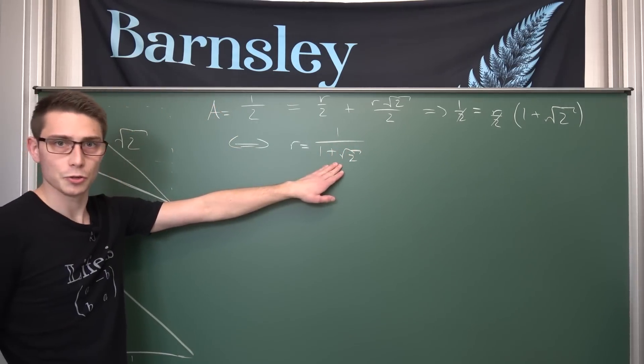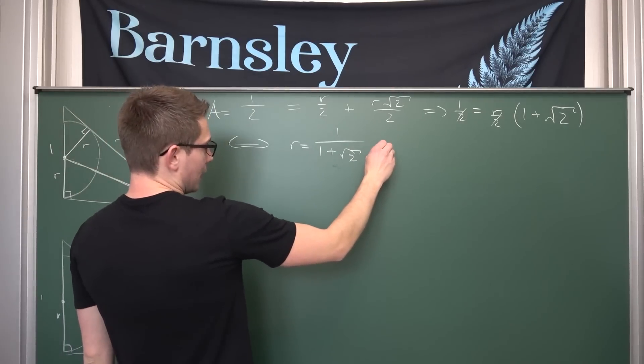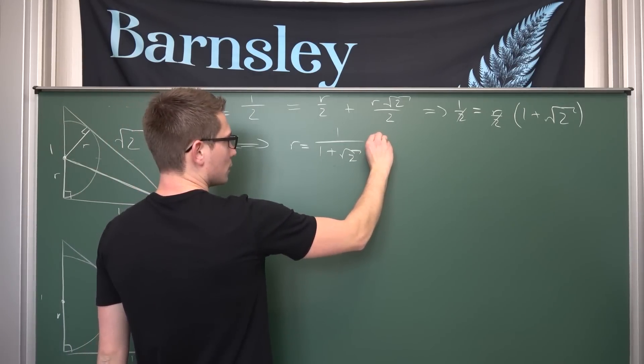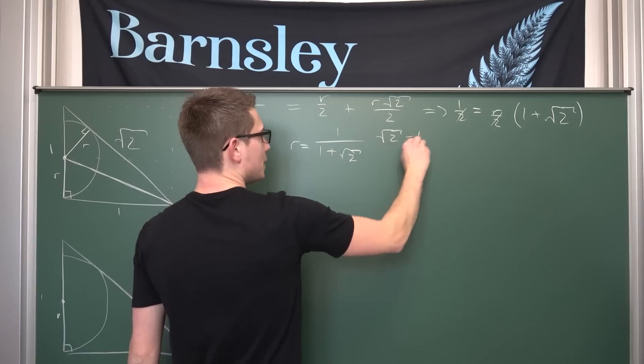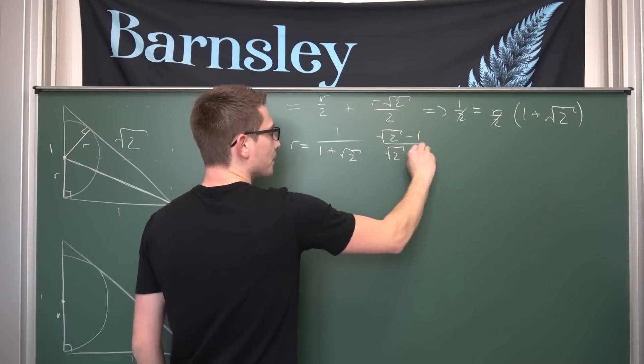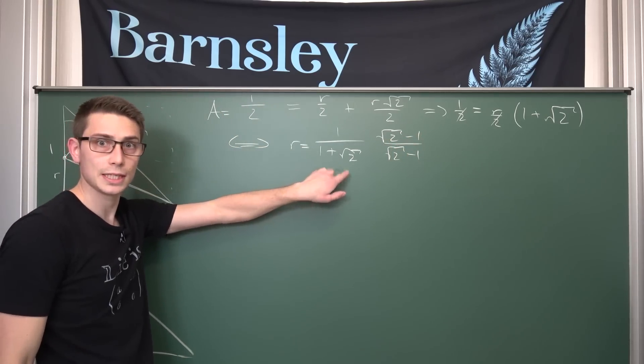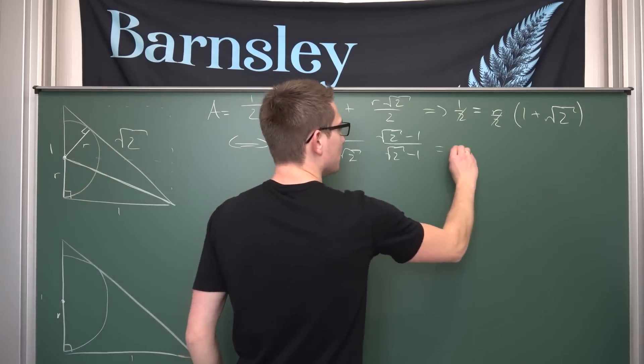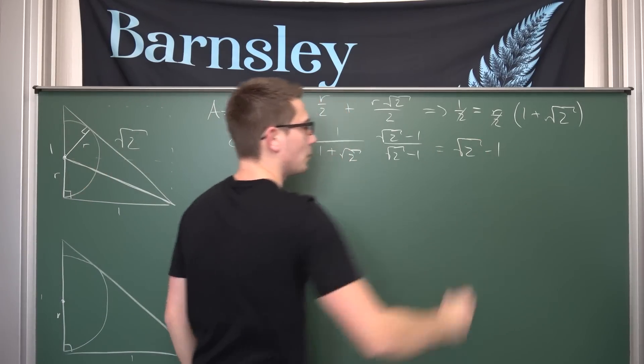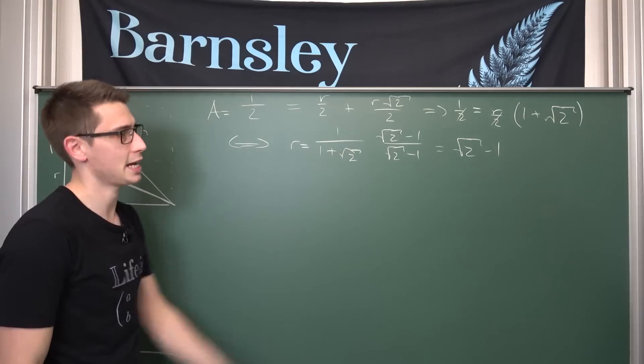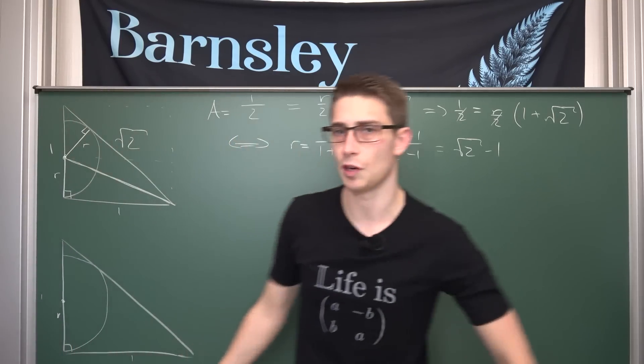So we have a common factor of 2 on both sides, or 1 half. So we can cancel this out. It's not equal to 0. Meaning if we were to divide both sides by 1 plus square root of 2, which is obviously not equal to 0, because square root of 2 is not equal to negative 1, we are going to get overall that r is nothing but 1 over 1 plus square root of 2.